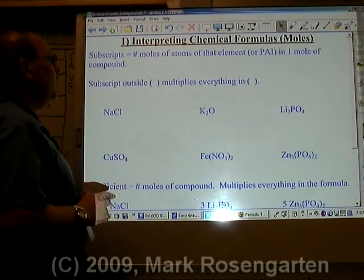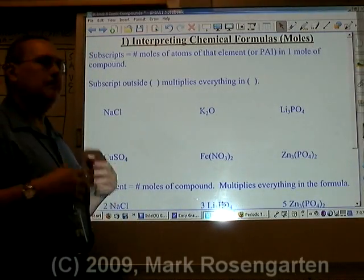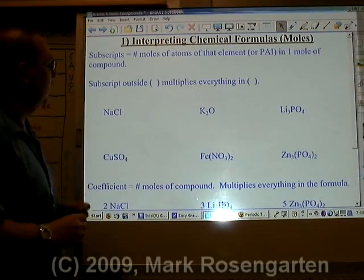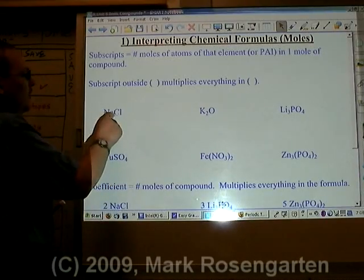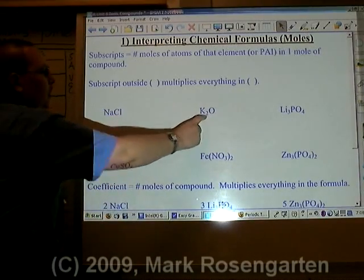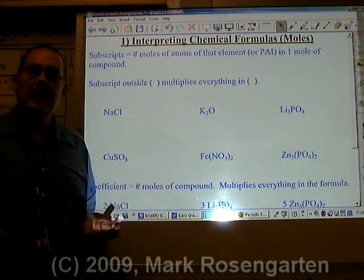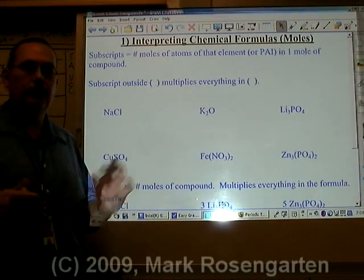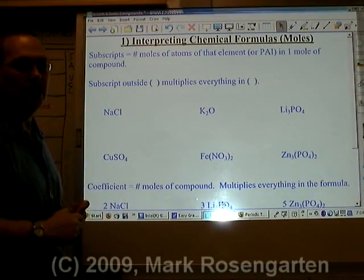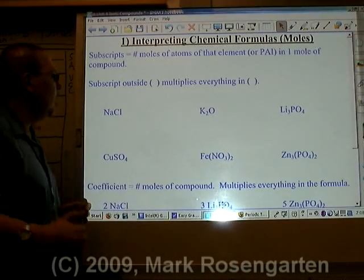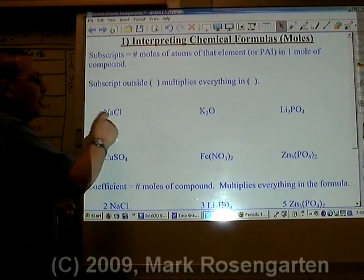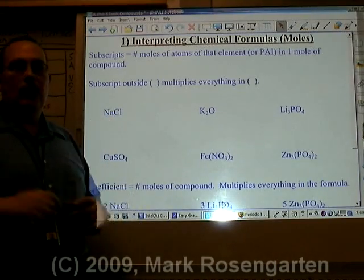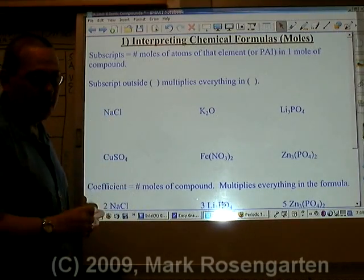When interpreting chemical formulas, it's important to know what exactly you're dealing with. These values give you either the ion-to-ion ratio in a formula unit of a substance, or how many moles of each substance there are in one mole of the substance.